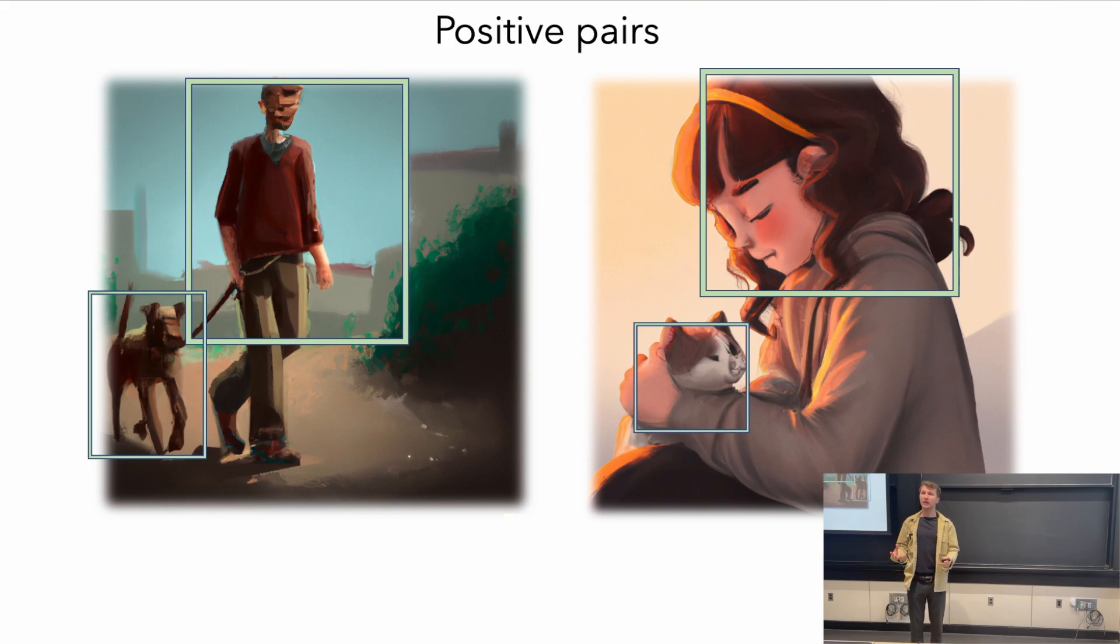Here we say that we believe concepts that appear in the same image are more related and close to each other in meaning than concepts that appear in different images. That's not always true, right? You can have a dog in this image and another image where there's dogs.